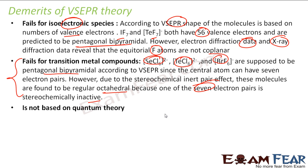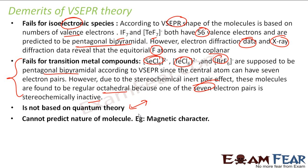One of the demerits of VSEPR theory is that it is not based on quantum theory. And since the current accepted model for the atom is quantum theory based, it is good that we have some quantum theory based model for predicting shape. Also, it cannot predict the nature of the molecule — for example, magnetic character. You cannot predict it using VSEPR theory.